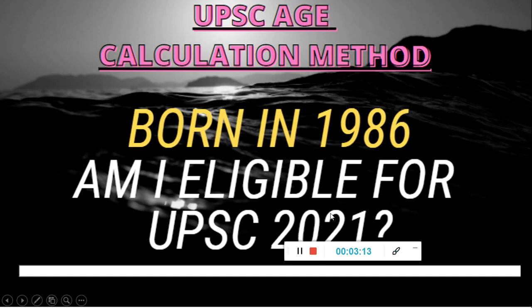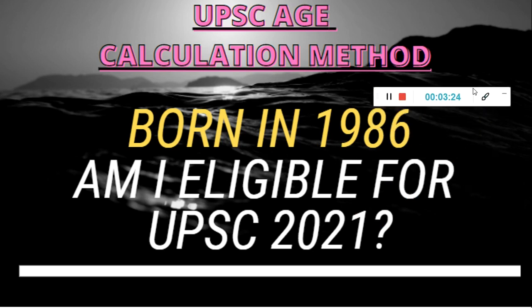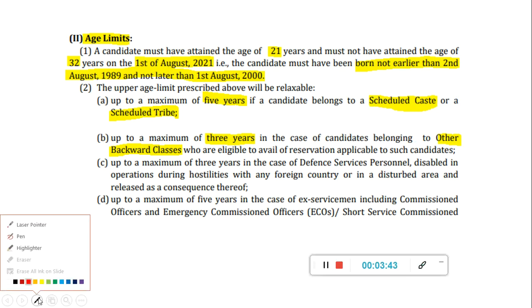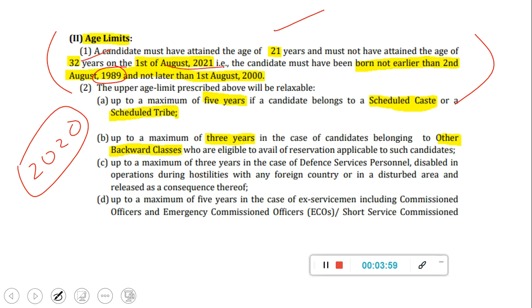This is about that issue. Now about the eligibility criteria — I already made a video about that. But because students are still asking and most people are commenting their birth date, asking 'am I eligible?' — I don't know what difficulty there is in calculating just minus three or minus five based on OBC or SC. So one more time we'll see here. Every year it is the same — it's not like UPSC made some new change this time. If you go and open the 2020 UPSC notification, this line will be the same. The candidate must have attained 21 to 32 as of August 2021. This is the standard criteria they've been using for many years.